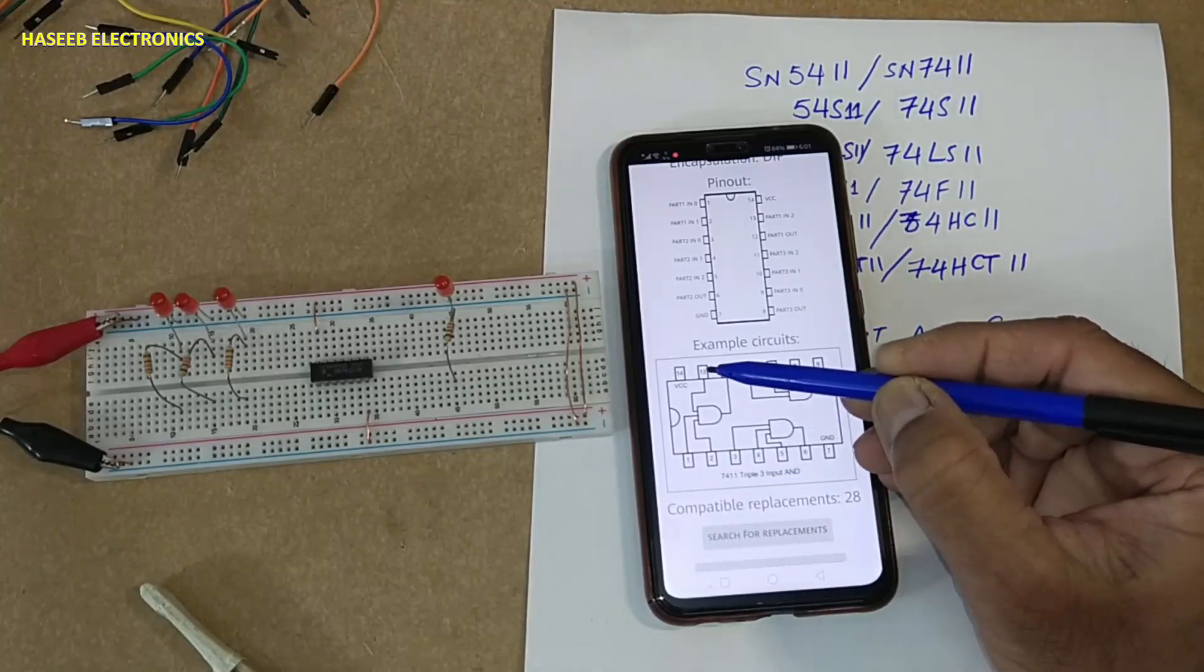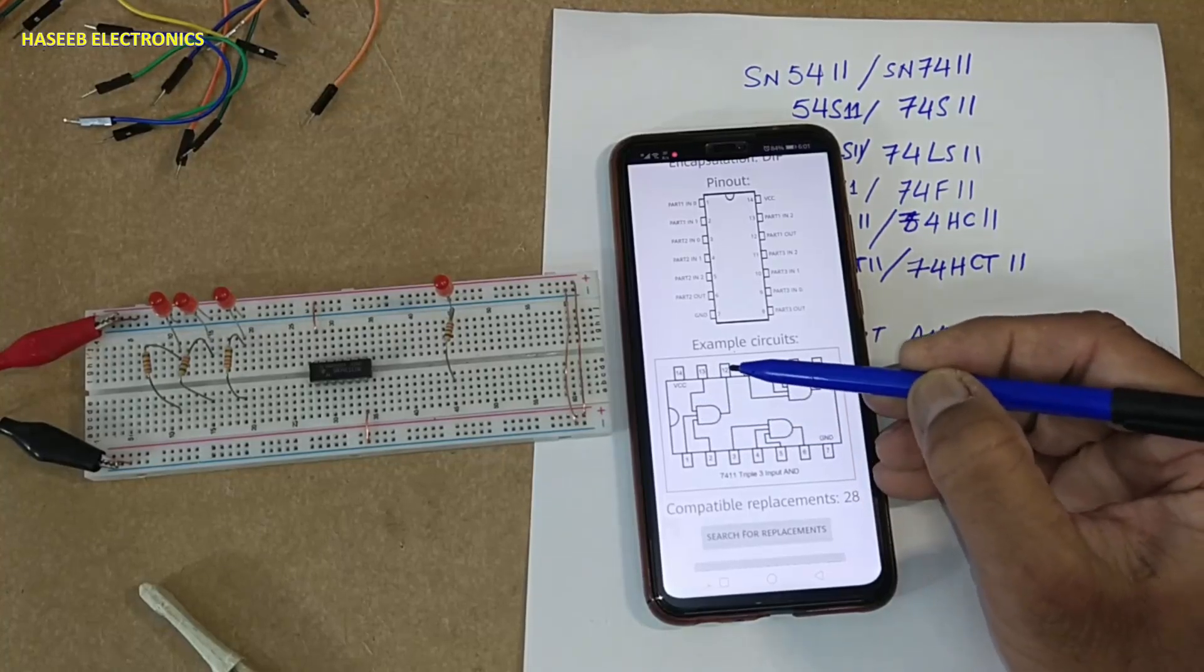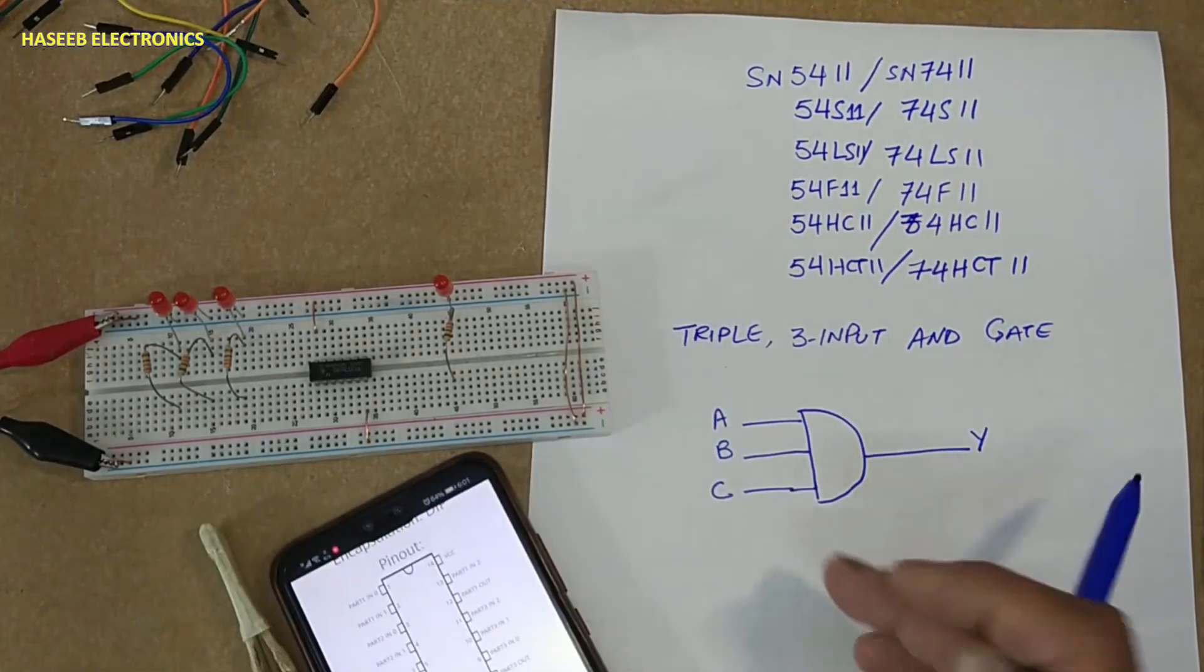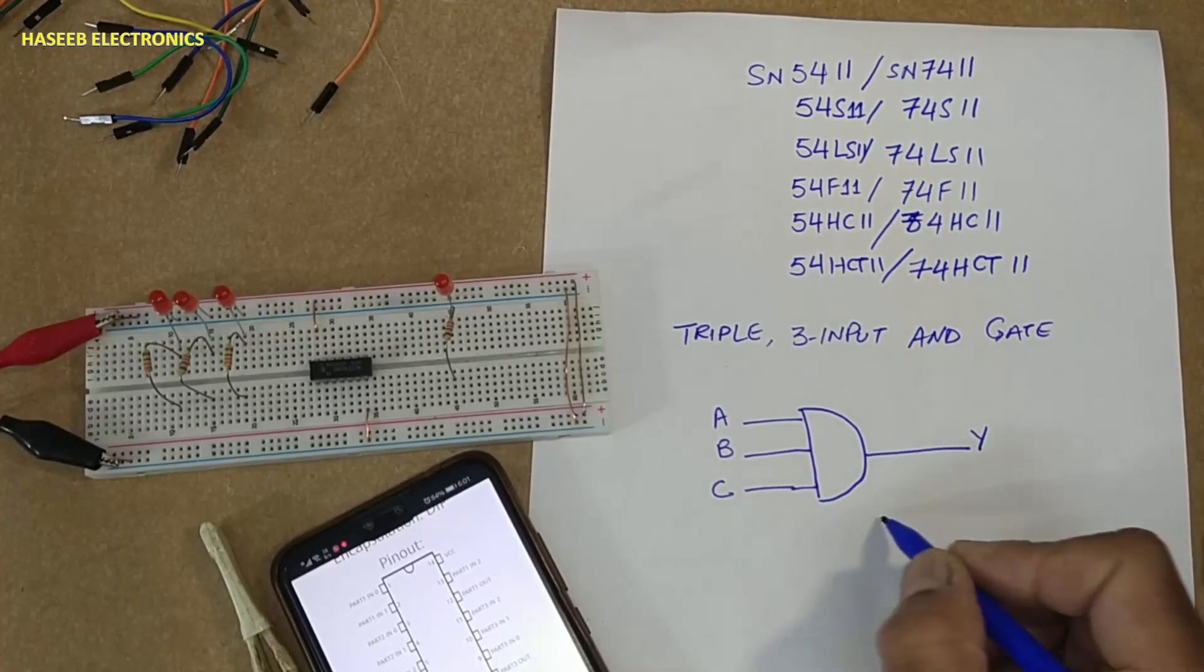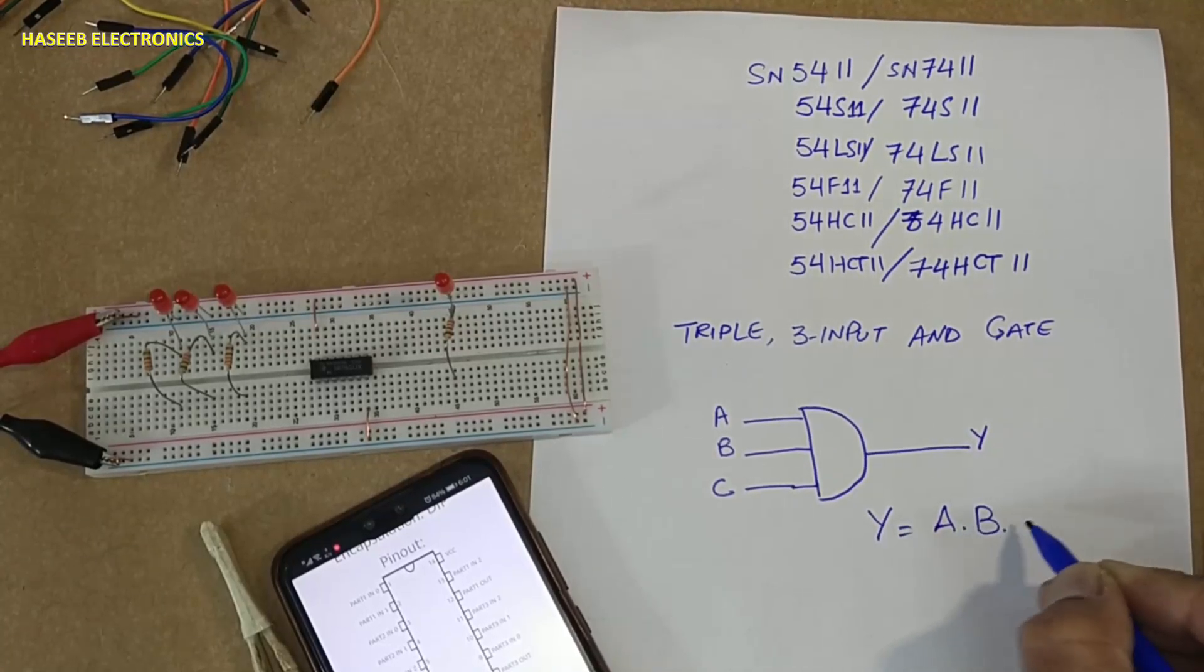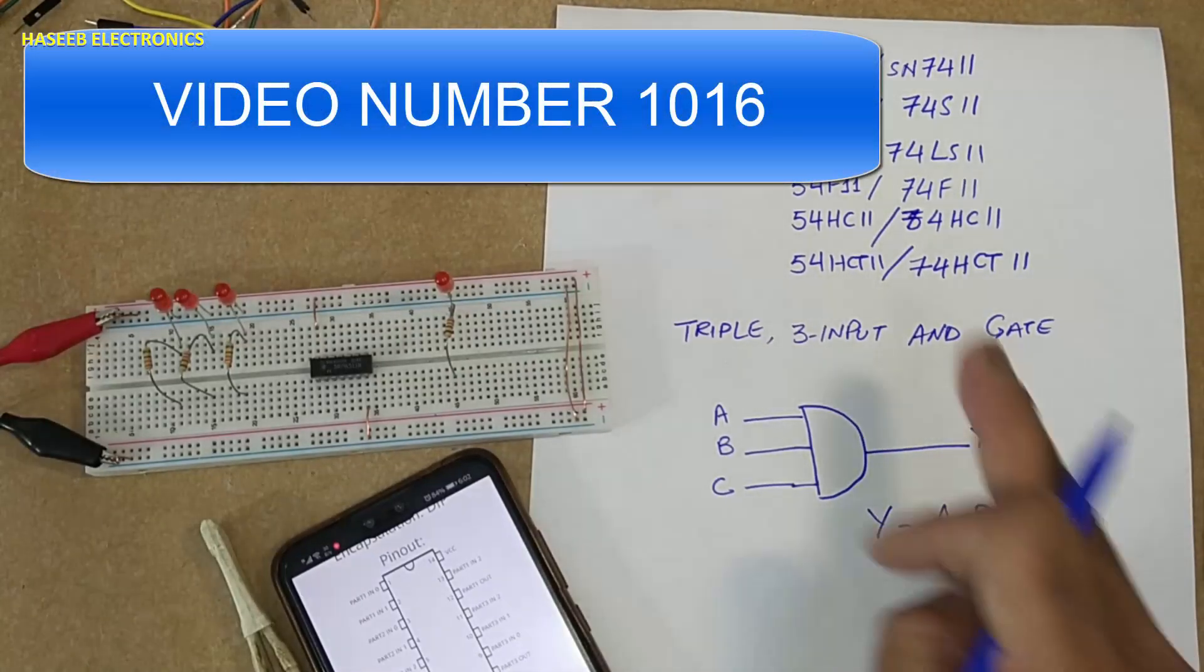Pin number 12 is output. When we say A, B, C inputs and Y output, output is equal to A dot B dot C. In the last video we discussed NAND gate, that was 5410 or 7410. This is an AND gate.